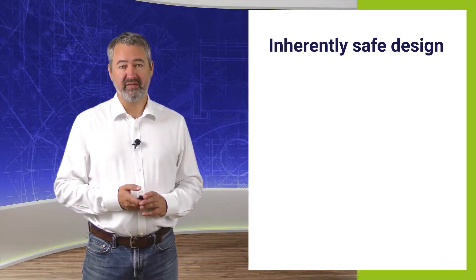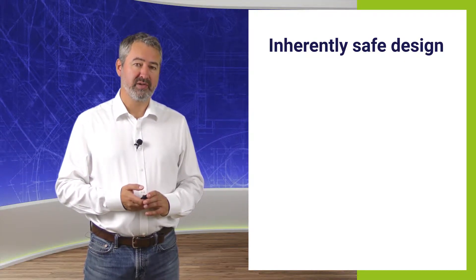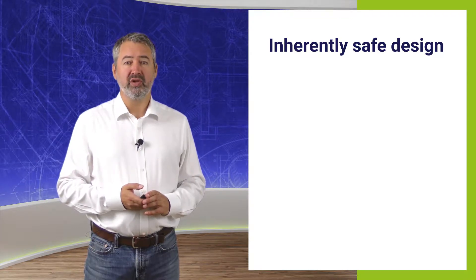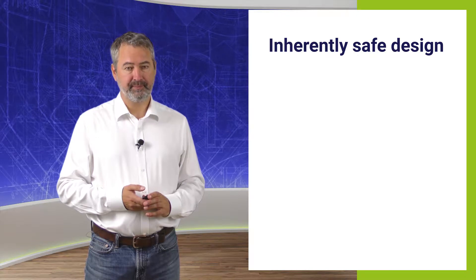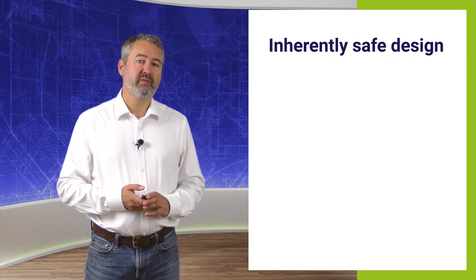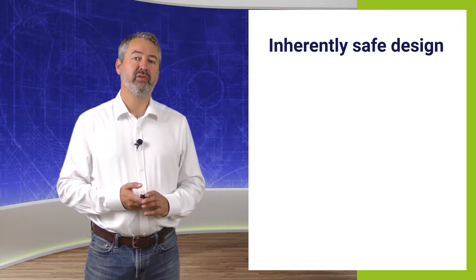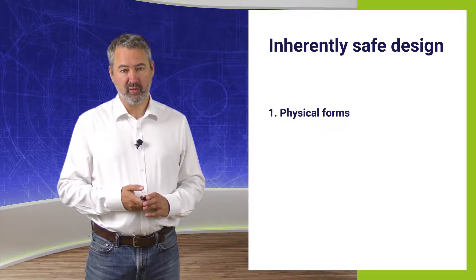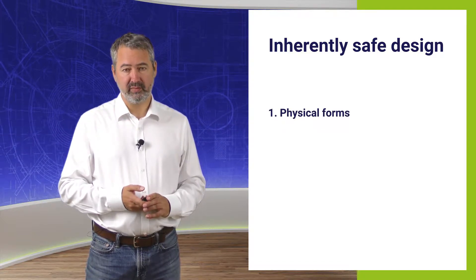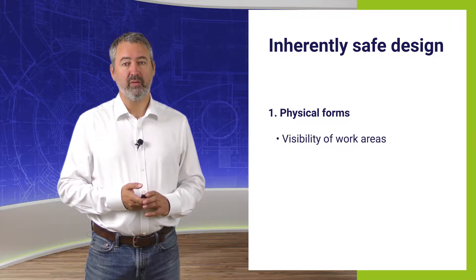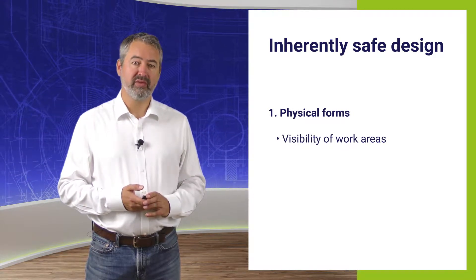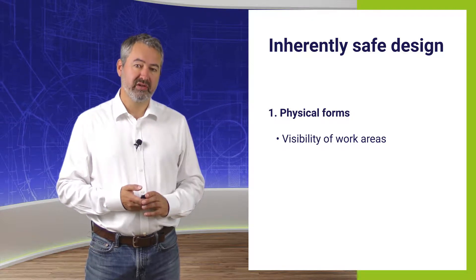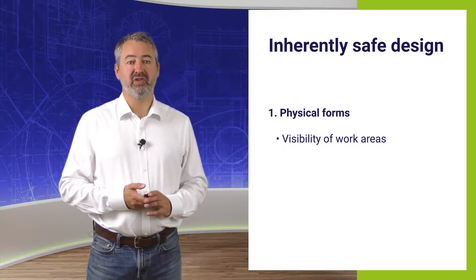What do we mean by an inherently safe design? This term encompasses all the measures which can only be influenced during the design phase. First of all, hazards can be avoided or risks reduced by the physical form of the machine. This includes, for example, the visibility of the work areas. Only when an operator has a good view of the machine from his control station can he operate the machine safely.